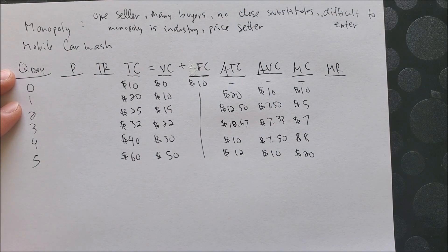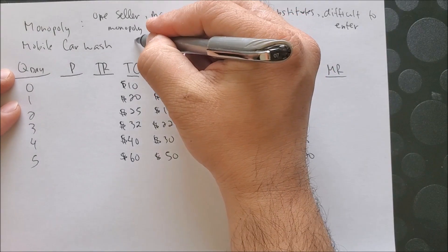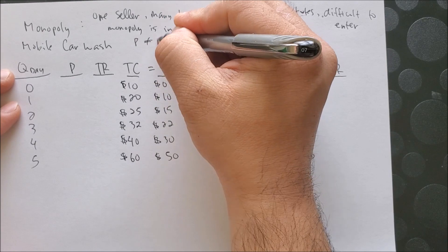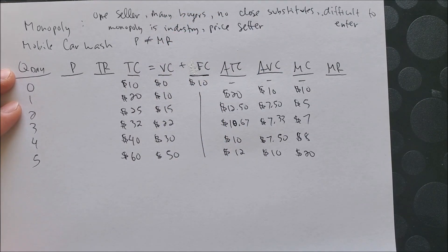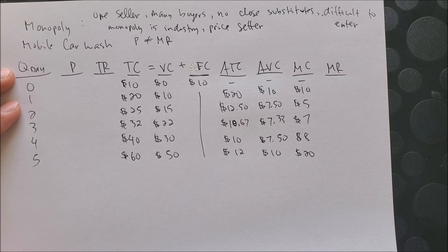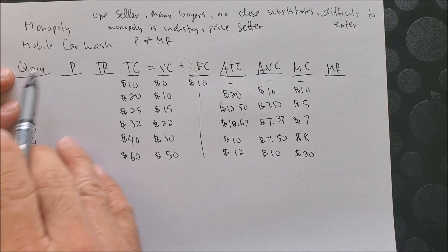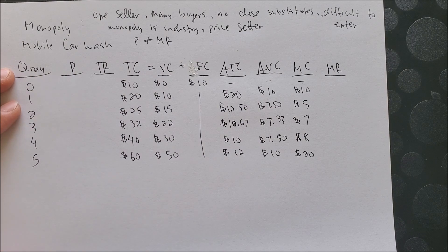So knowing that they are a price setter, we can then say that price will not equal marginal revenue. Again, as a recap, marginal revenue looks at how much revenue a company is going to take in if they were to produce one more good. In our case of a mobile car wash, how much in revenue will the firm receive when it washes one more vehicle?